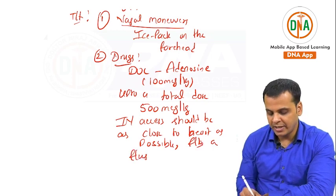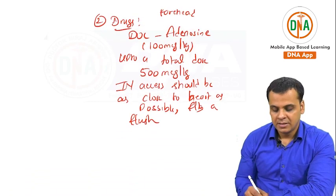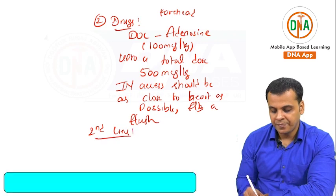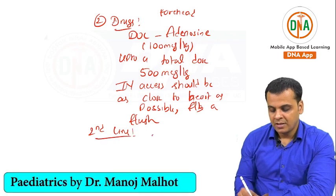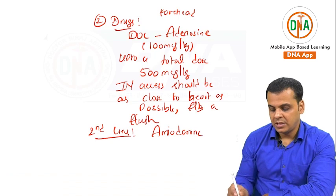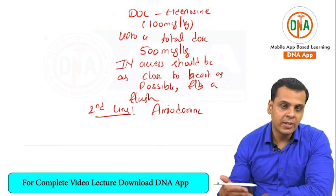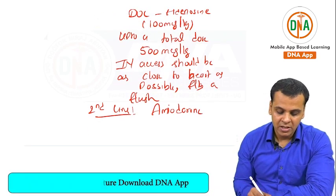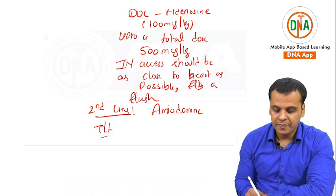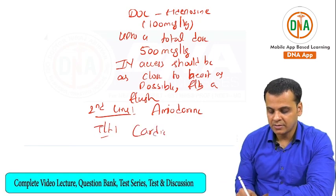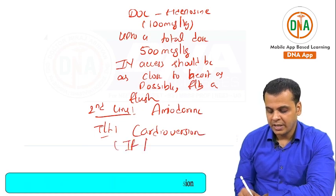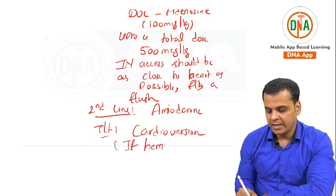If there is no response, the second line is amiodarone. If at any point the child goes into cardiogenic shock — that is, if hemodynamically unstable — then the treatment is cardioversion.